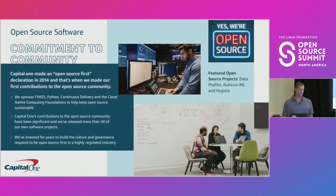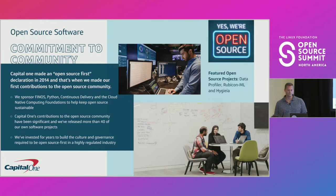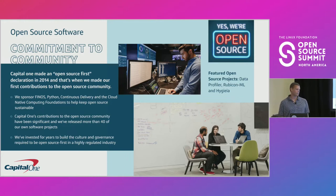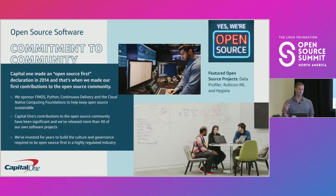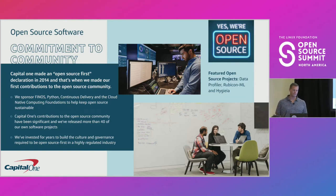We're also big into open source. In 2014, we made our first contribution as a company to open source with a declaration that we're open source first. Since then we've released about 40 open source projects. One of the most popular ones is Hygeo, which is a DevOps dashboard that's used by a number of companies across the country. We've also invested a lot of time over the years in building the right culture and governance to have open source in a highly regulated banking industry.